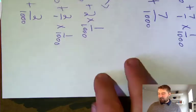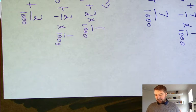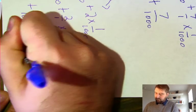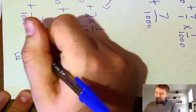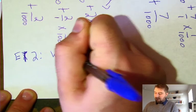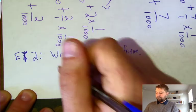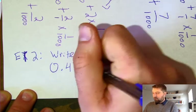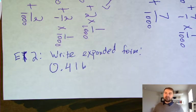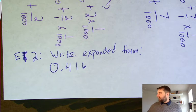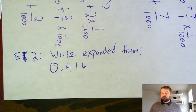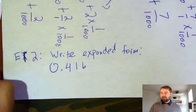It is time for your second exit ticket question—ET2. Write the expanded form of this decimal: 0.416. Solve that on your own and submit it as exit ticket question two. Once you've got that solved, we're going to move into a number that has both a whole number and a decimal place.